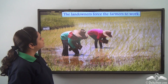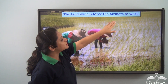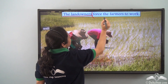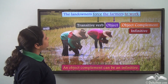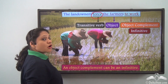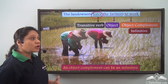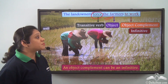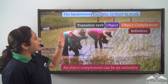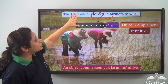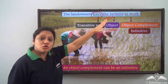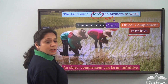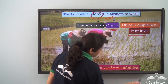Another example: 'The landowners force the farmers to work.' The subject is 'the landowners,' and the predicate is 'force the farmers to work.' This predicate has the transitive verb 'force' which takes the object 'the farmers.' So 'to work' is the complement here, telling us more about the object. The landowners force the farmers to do what? To work. So 'to work' is an object complement, and since 'to work' is an infinitive, object complements can also be an infinitive.